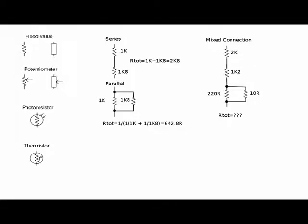Here are some symbols for resistors. At the top left you can see the fixed value — there are two normal symbols that people use; they're interchangeable and mean the same thing. Then there's a potentiometer, which some people call a variable resistor. It's not actually a variable resistor until you connect the wiper, which is the central terminal, to one of the two supply terminals. Then you've got a photoresistor — a resistor that changes with light — and a thermistor, a resistor that changes with temperature. It's worth remembering that all resistors change with temperature to a certain amount.